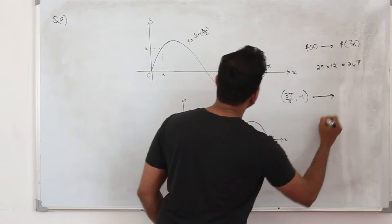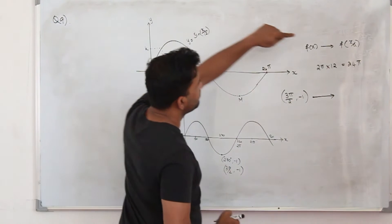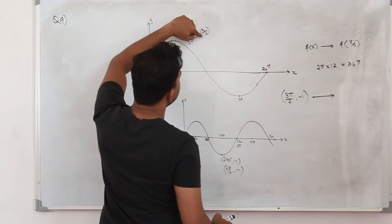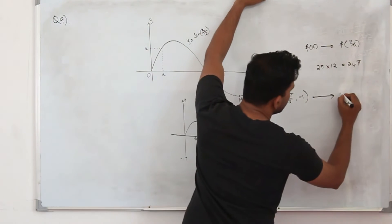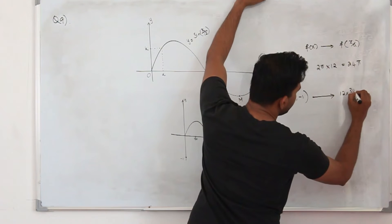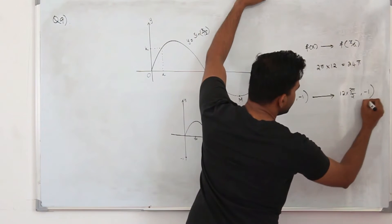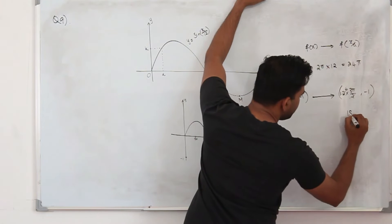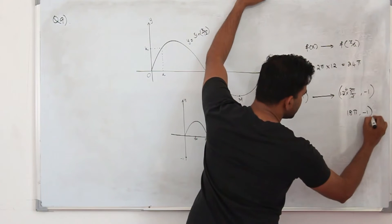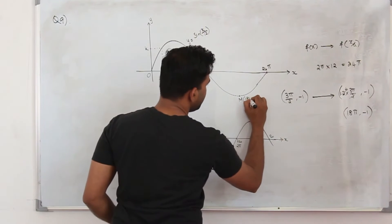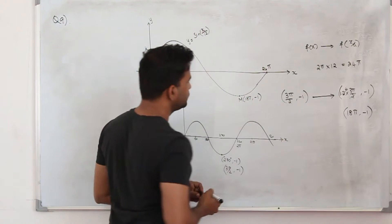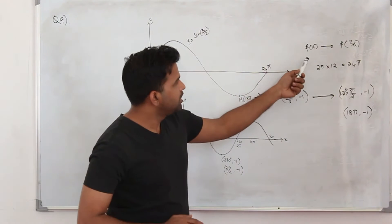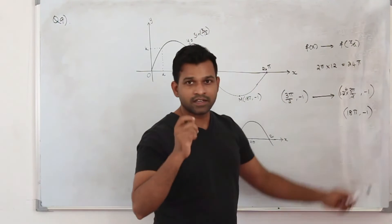When we apply the transformation f(x/a), the x-coordinates are multiplied by a, which is 12. So we multiply the x-coordinate 3π/2 by 12: 12 × (3π/2) = 18π. The y-coordinate stays the same. So the minimum point M is at (18π, -1). Just apply the transformations learned earlier and you get the answer.